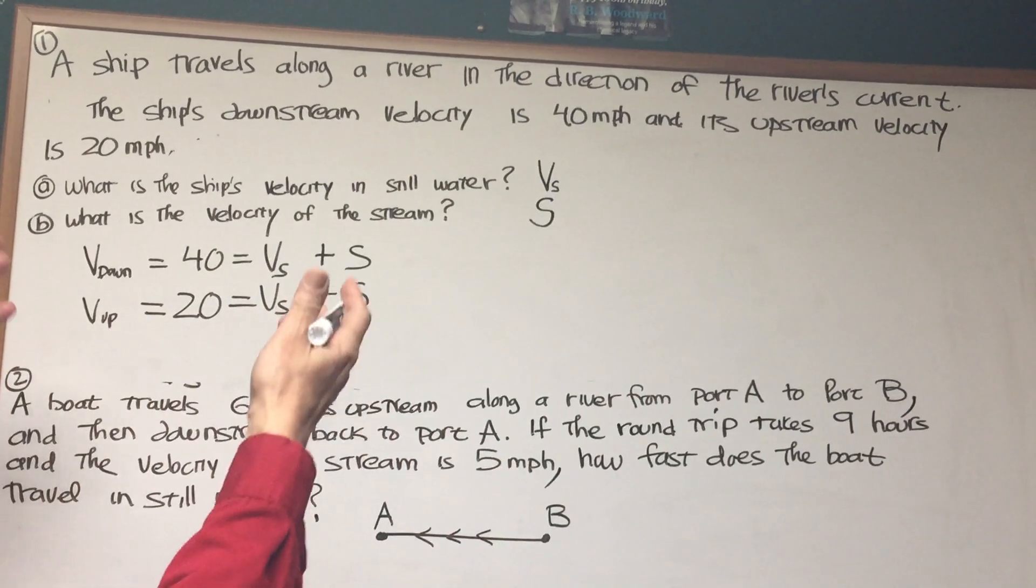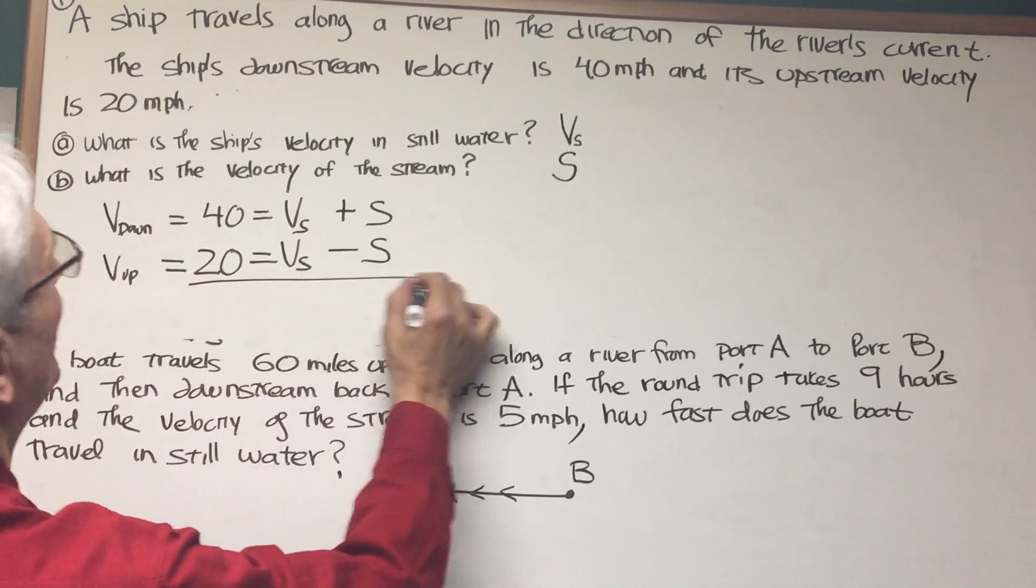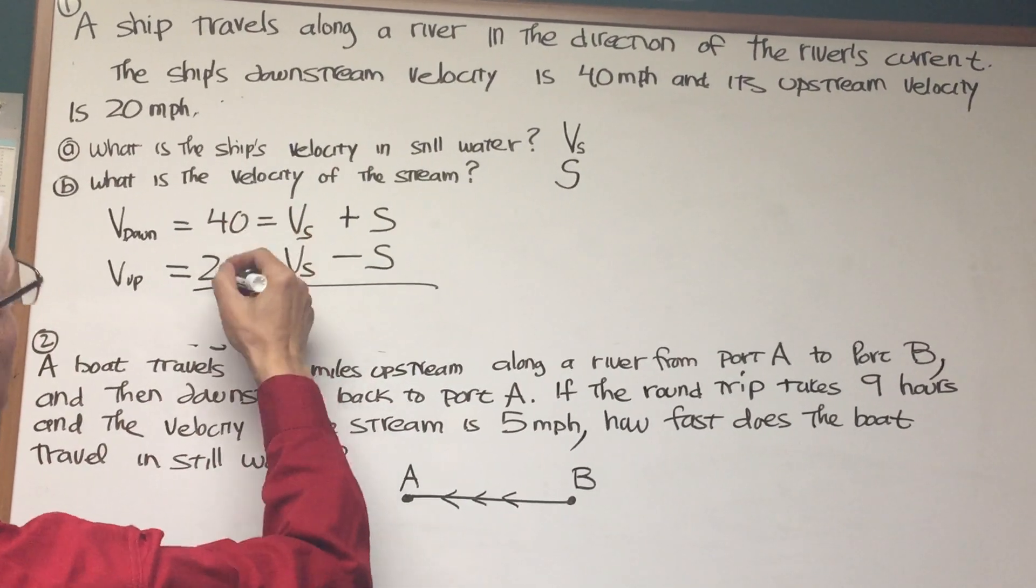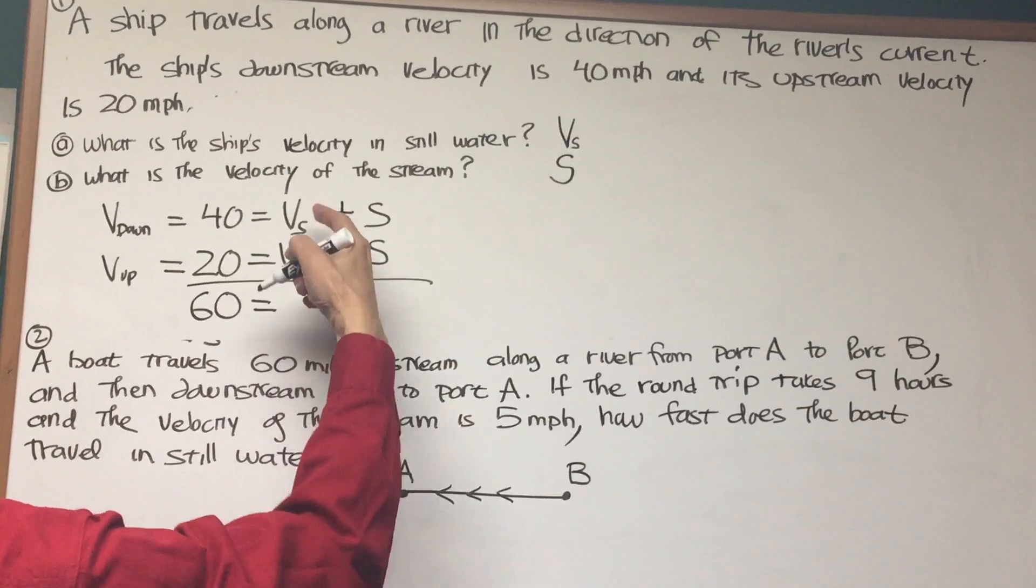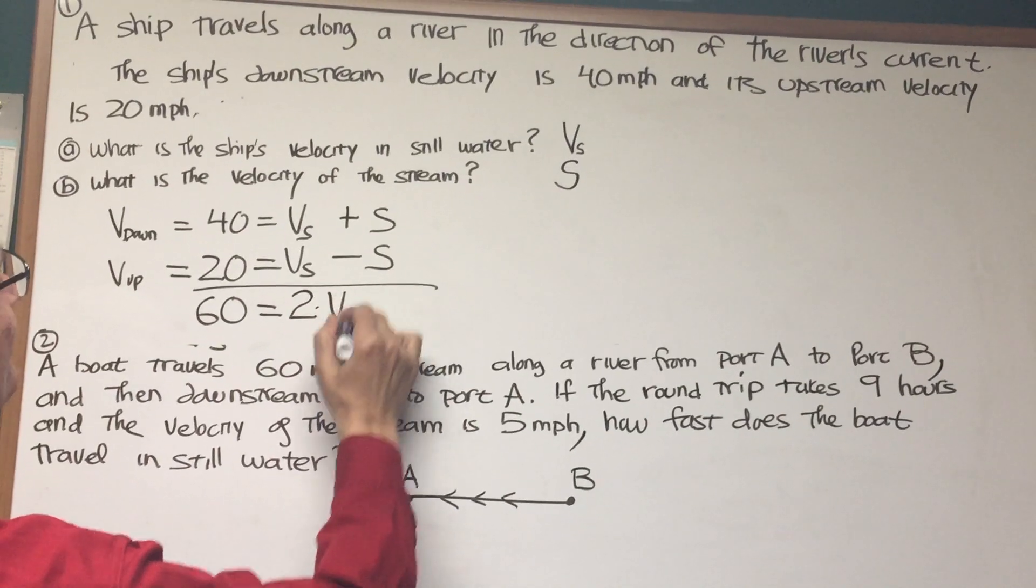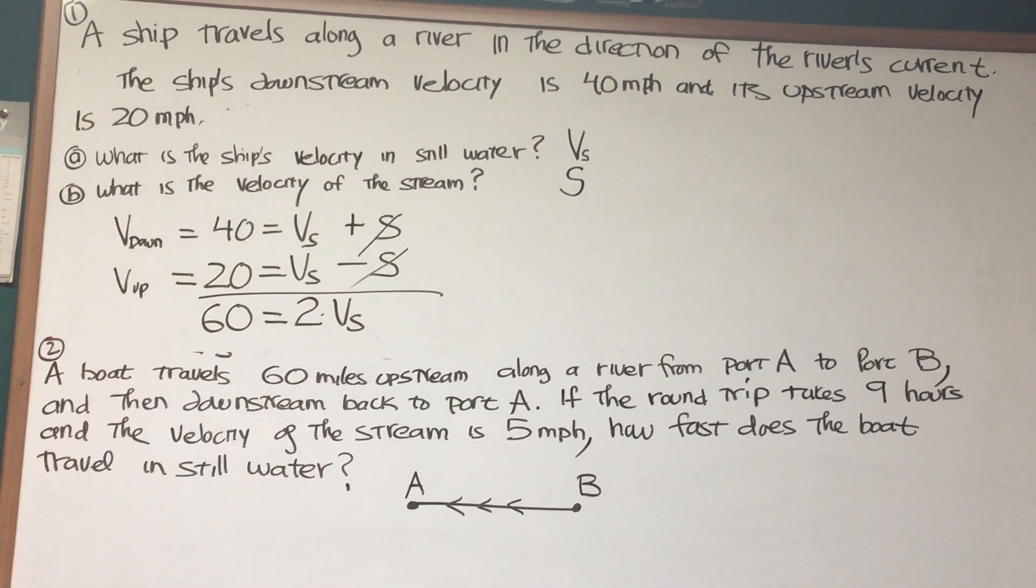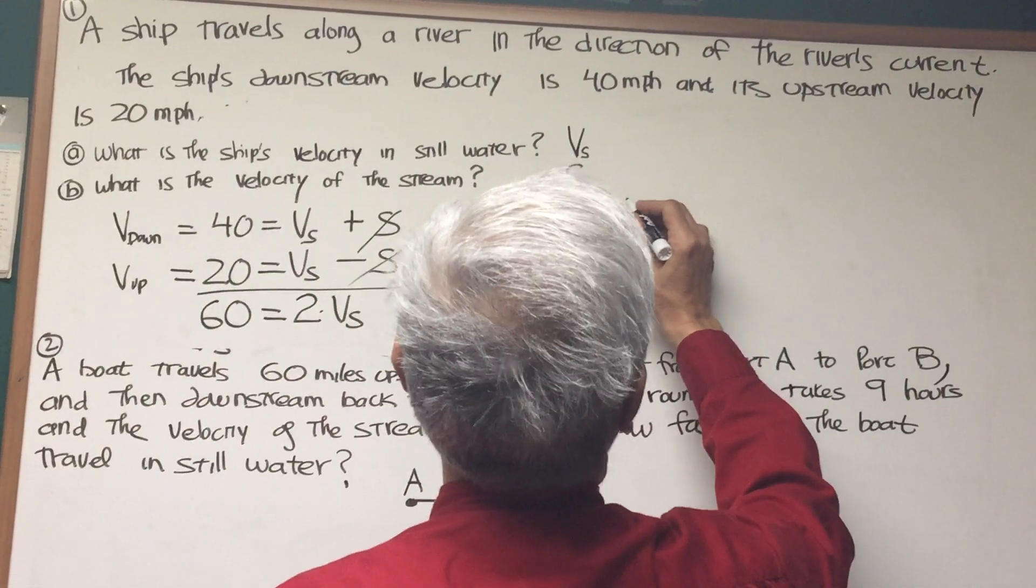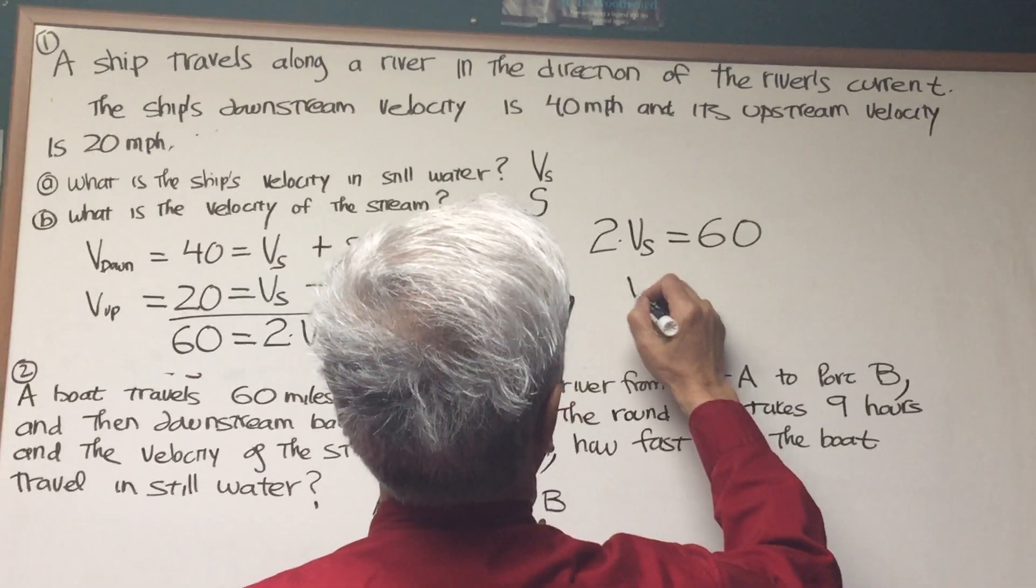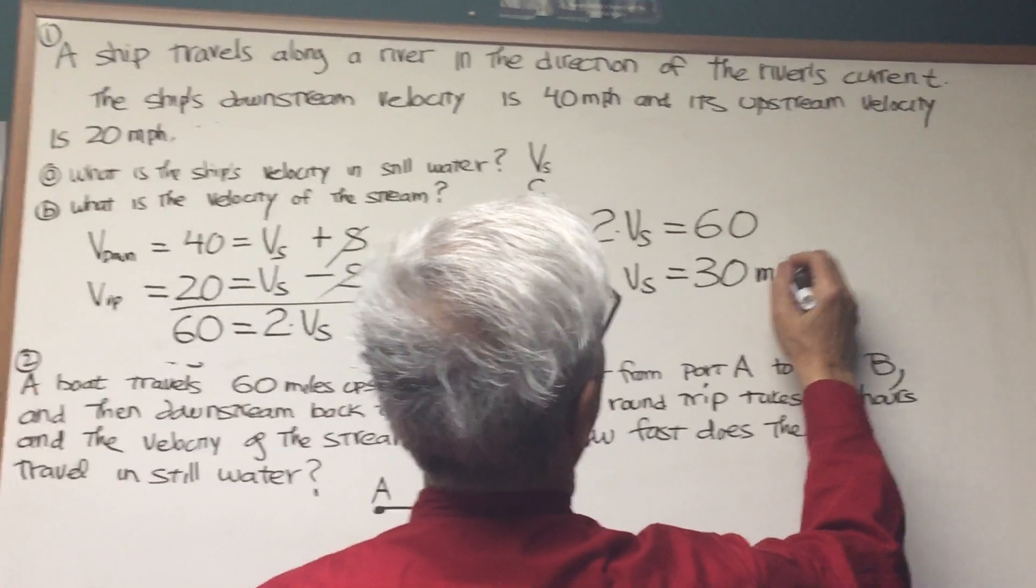So we want to know what V sub S is, the velocity of the ship in still water. Let's take these two equations and just add them together. On the left side, 40 plus 20 is 60. On the right side, V sub S plus V sub S is twice V sub S. And the S's conveniently cancel out, S minus S. So what do we have here? We have 2 times the velocity in still water is equal to 60. Therefore, the velocity in still water is 30 miles per hour.